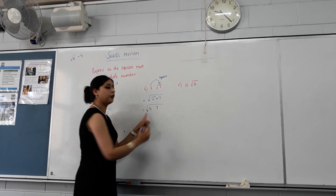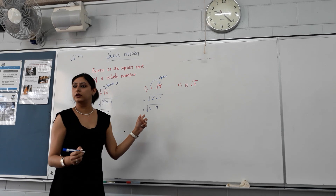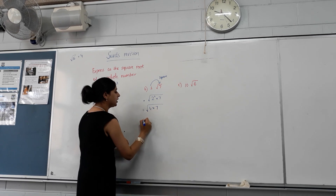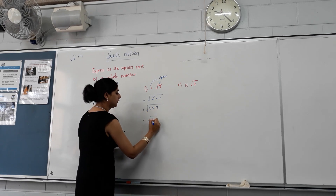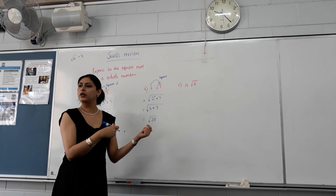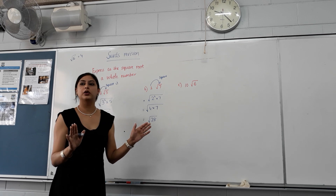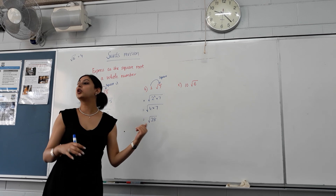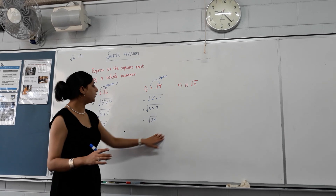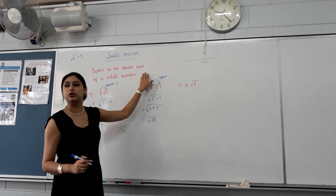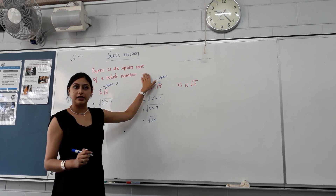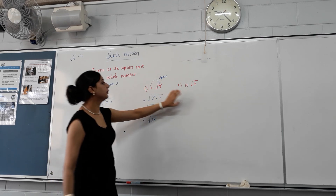What happens between 4 and 7? You put a times sign. Which gives 28. Do you want to simplify it? No — because we're actually doing the opposite of simplification. If you simplify, you should get back to 2 root 7. Make sense?